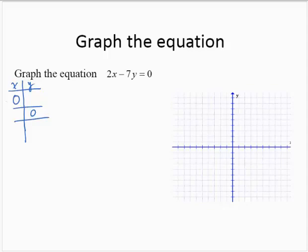So if I let x equal 0, then I'd have 2 times 0 minus 7y equals 0. So that's 0 minus 7y equals 0, which is negative 7y equals 0. Dividing by negative 7, 0 divided by negative 7 is 0, so y equals 0.